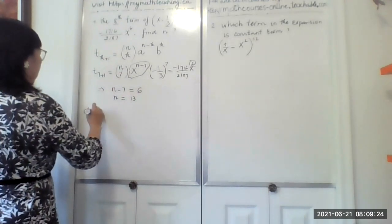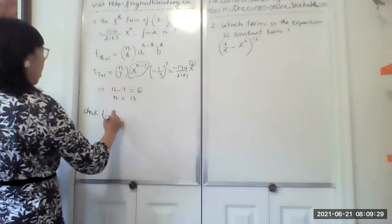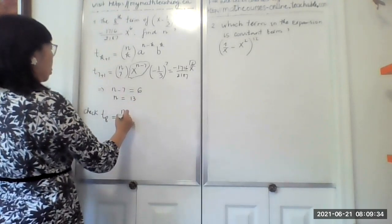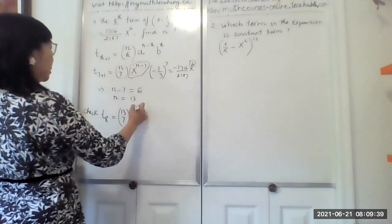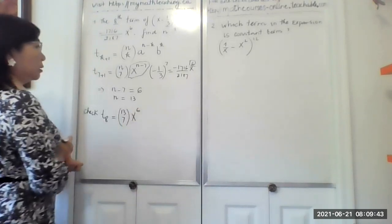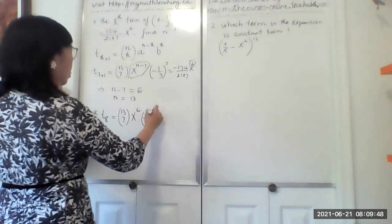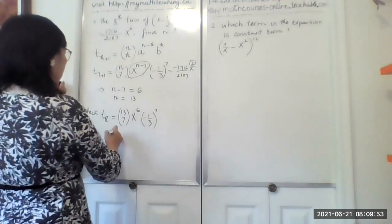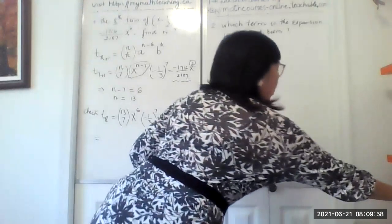Now let's check. If we have n equal 13, so now our eighth term will be t sub 8 equal 13 choose 7. And x to the power of 13 minus 7 is 6. And the next term will be minus 1 over 3 to the power of 7. Let's find out if this is the true answer.